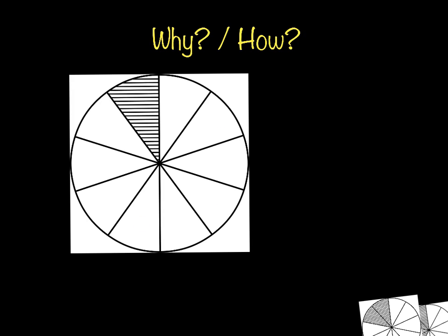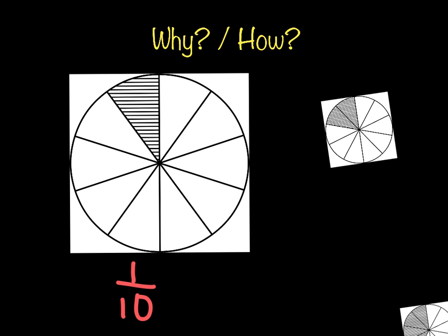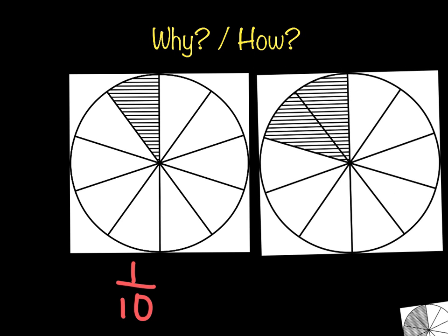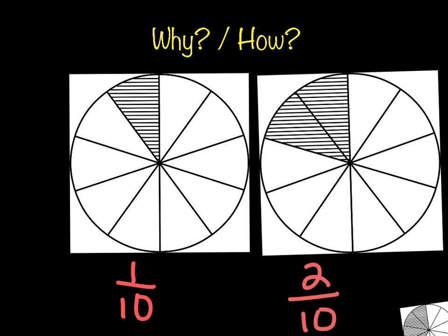So our fraction for this particular fraction circle would be one-tenth. But if I pull up another fraction circle and we try to compare the two, this fraction circle I would have two-tenths. So if I were going to compare them, which one is bigger? Hopefully you're saying two-tenths. So one-tenth would be less than two-tenths in this comparison.